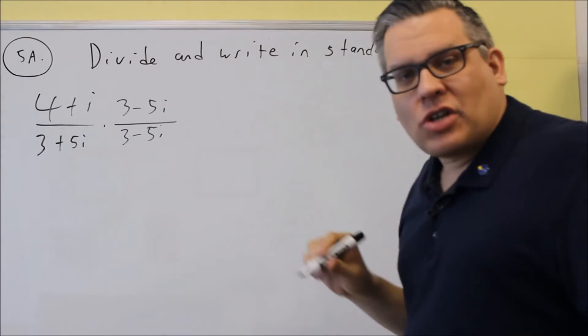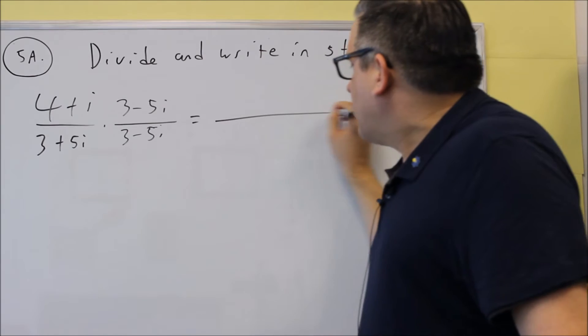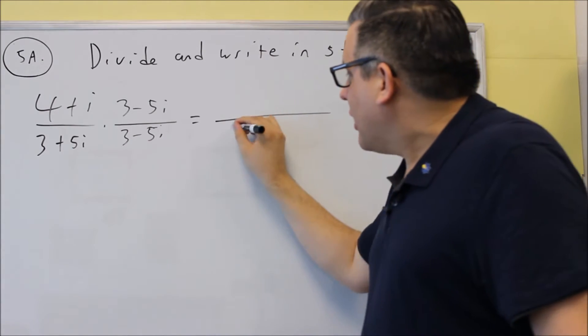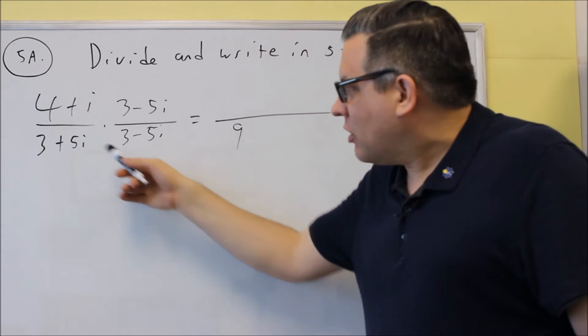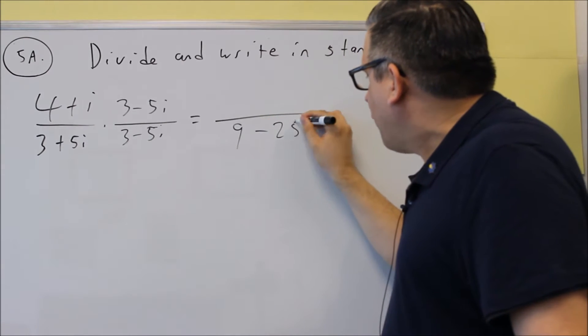So we're going to multiply across the top, across the bottom. Let's do the bottom one first. If you do 3 times 3, 9, then you have minus 15 plus 15, which will cancel, and then you get minus 25i squared.